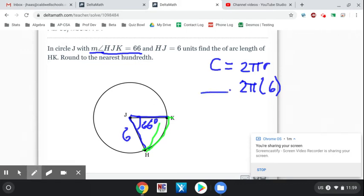fraction of the circle. All the way around the circle is 360 degrees, and the distance around that little arc is 66 degrees. So I have 66 out of 360 times 2π(6). Now they want it to the nearest hundredth, so we're going to pull up Desmos and